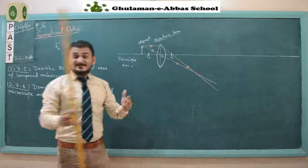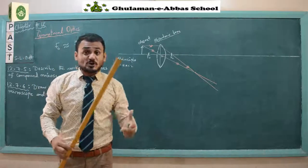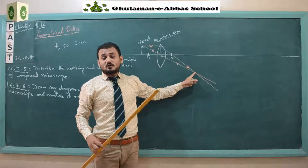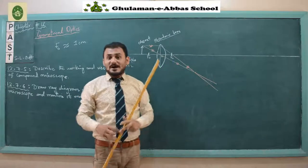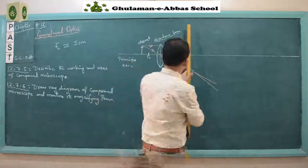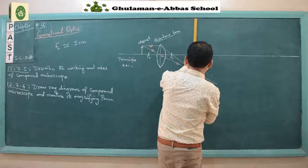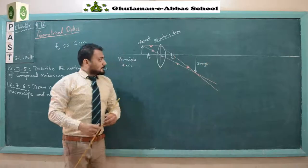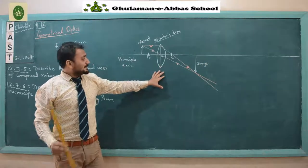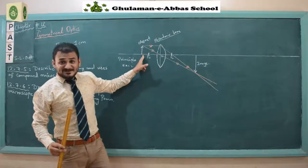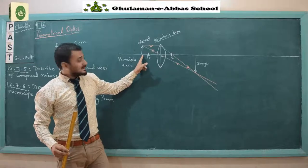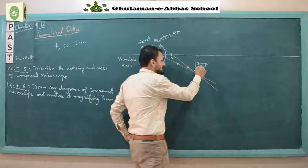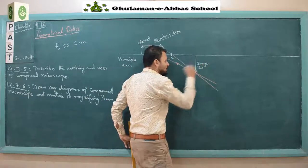We draw the image by drawing a line from the principal axis to the point where the refracted rays meet. This gives us the image formed by the objective lens. We call this image I₁.